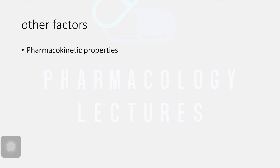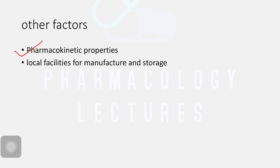A few other factors to keep in mind: you also need to know about the pharmacokinetic properties of the drug — how quickly it produces action, for how long its action lasts, chances of drug interactions, how it gets distributed, and what its half-life is. We will discuss these in detail in pharmacokinetics, but for now, remember that the pharmacokinetic profile of that particular drug is important.